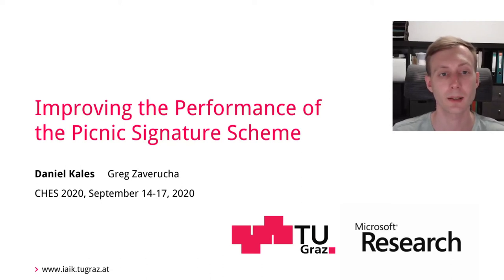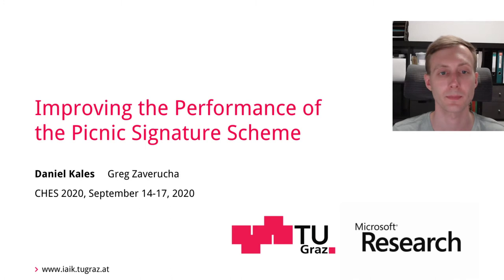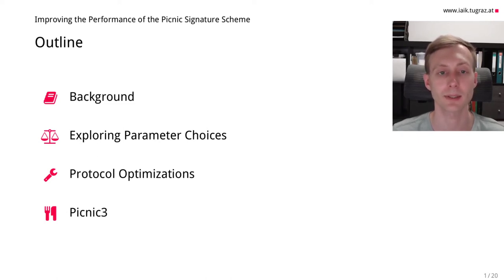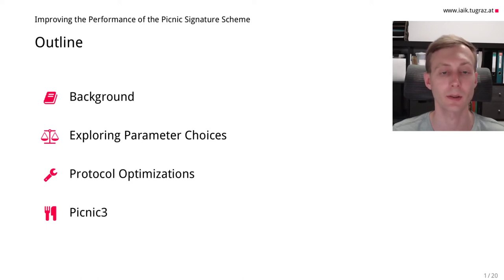Hi, my name is Daniel and I'm going to be talking about our work on improving the performance of the Picnic Signature Scheme. This was joint work with Greg from Microsoft Research. In this talk, I'll first be going over the background of Picnic — what it is and how it works internally. Then we'll explore some parameter choices that can be made, and finally I'll show some protocol optimizations and our new parameter set called Picnic3 that combines all of them.